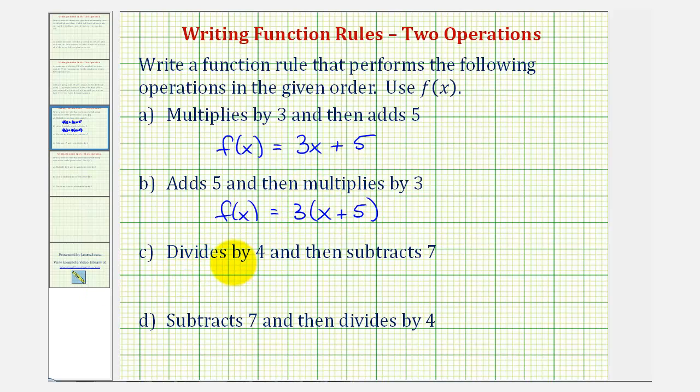For part c, our function divides by four and then subtracts seven. So our function f(x) would be equal to the input of x divided by four. So x divided by four, and then we subtract seven. So minus seven.